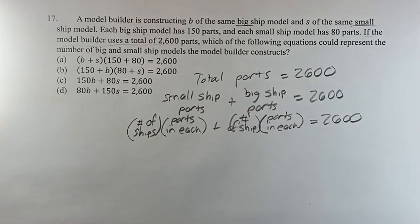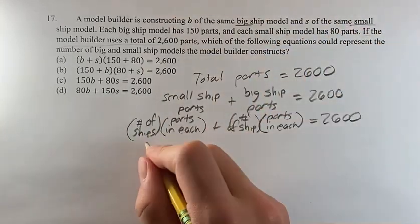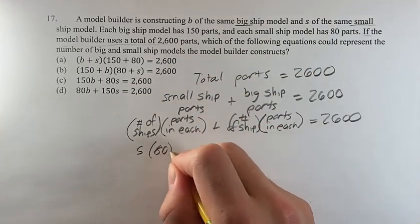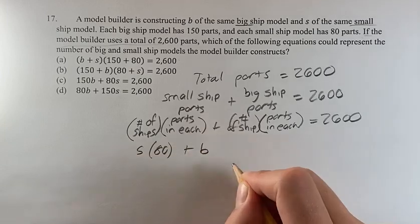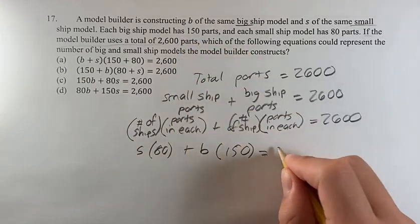We've actually been given all the information we need to fill out this equation. The number of small ships is s. Each small ship has 80 parts. The number of big ships is b. Parts in each is 150. And that's going to be equal to 2,600.